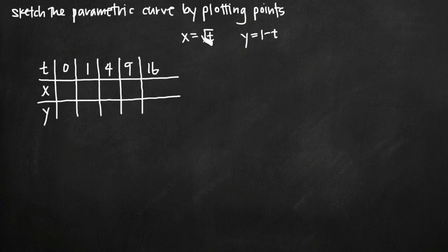We're going to plug them into both of our equations for x and y here. When we plug into the equation for x, we'll plug in here this first point, 0 for t. The square root of 0 is just 0, so we'll get that there.